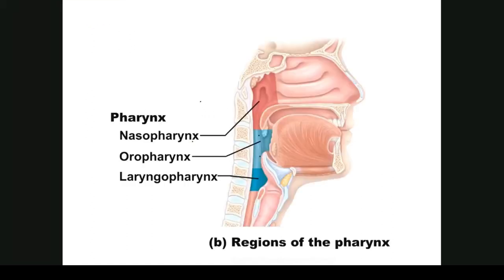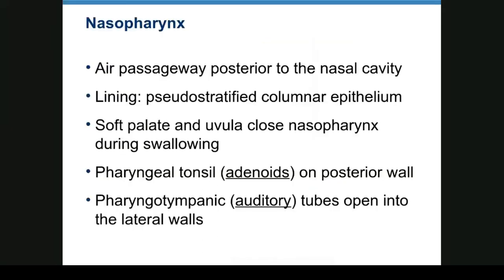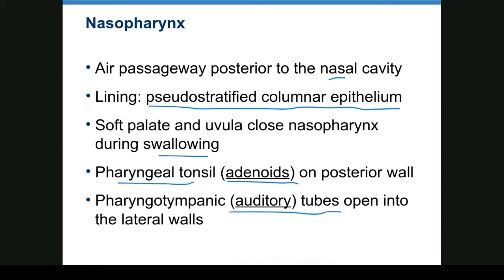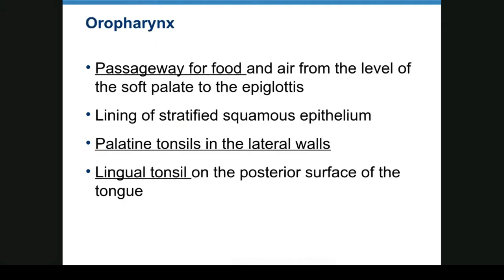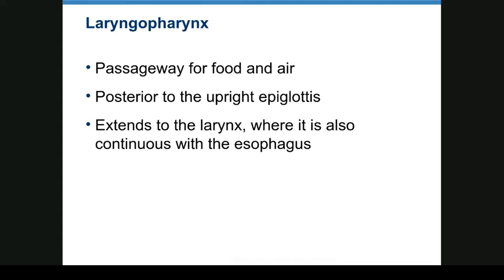Here we have our pharynx. The nasopharynx is the part above the uvula. The oropharynx is your throat region, and then there is the laryngopharynx. The nasopharynx is lined with pseudostratified columnar epithelium; the soft palate and uvula close during swallowing. The pharyngeal tonsil, or adenoids, as well as the auditory tubes, are in the nasopharynx. The oropharynx is lined with stratified squamous epithelium, and this is where the palatine and lingual tonsils are. It passes both food and air and extends down to the larynx.